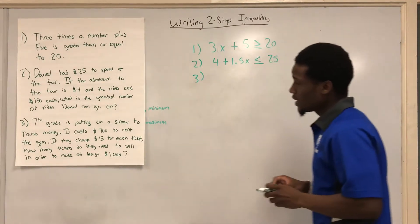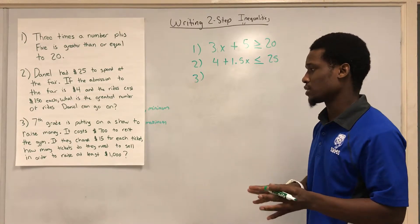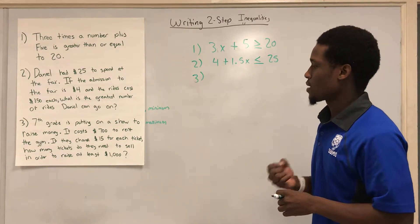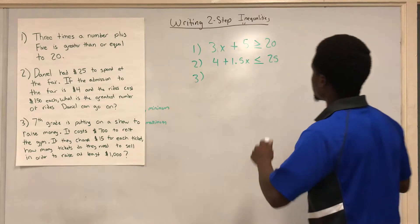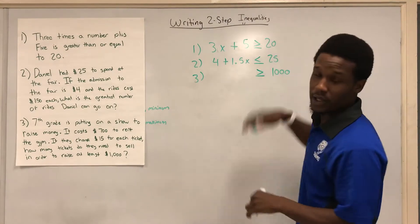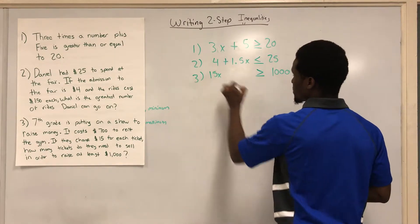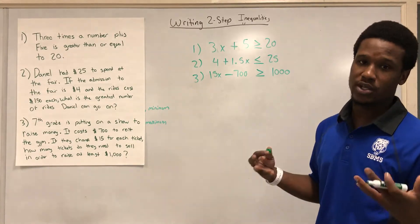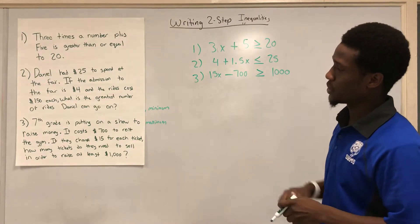Number three. Seventh grade is putting on a show to raise money. It costs $700 to rent a gym, so cost, that is a negative thing. If they charge $15 for each ticket, how many tickets do they need to sell in order to raise at least $1,000? So at least $1,000 means greater than or equal to $1,000. Always try to start with your target or your inequality. It makes things a lot easier. And I know they're going to charge $15 per ticket, but it did cost them $700 in order to first rent the gym out. So my inequality is going to be 15x minus $700 has to be greater than or equal to $1,000.